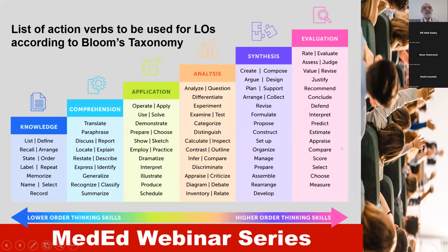Here is a list of action verbs that can be used to describe learning outcomes according to Bloom's taxonomy. For example, at the knowledge level, the action verbs that can be used include list, define, recall or arrange. At the synthesis level, the action verbs would be create, compose, argue or design. And at the evaluation stage, verbs may include assess, judge, value, revise and so on.